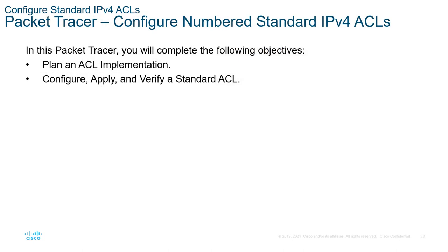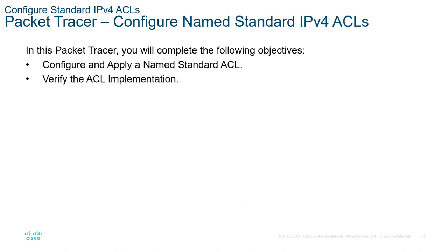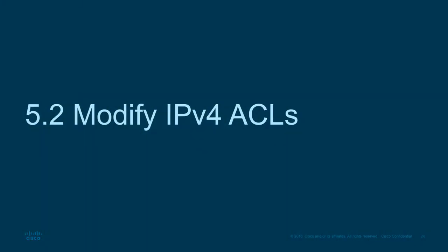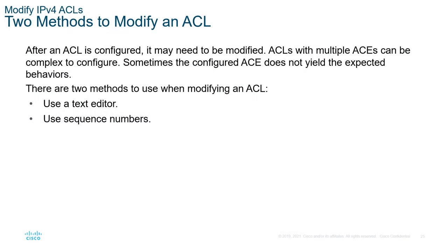Here we have a Packet Tracer lab for configuring a numbered standard IPv4 ACL, and another covering something slightly different. What happens if you make a mistake and need to modify an ACL? There are two ways to do this. After an ACL is configured, we may need to modify it. ACLs with multiple ACEs can be complex to configure, and sometimes the configured ACE doesn't produce the appropriate response. We can modify using either a text editor or sequence numbers.